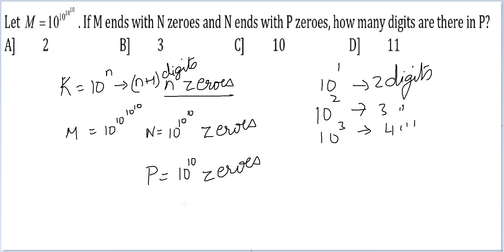So, if p is 10 raised to the power n, it will have 11 digits and therefore the answer to this question should be option d, 11. Thank you.